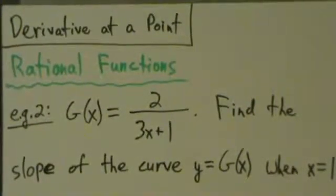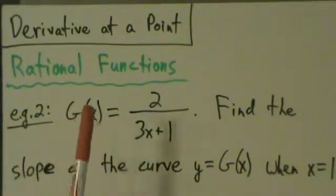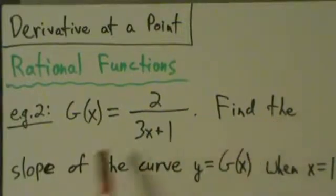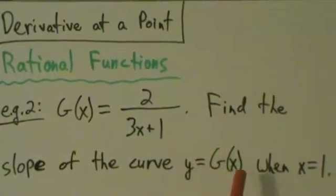Alright, so here's another example with rational functions, finding the derivative at a point. Example 2: G(x) = 2/(3x+1), and we want to find the slope of the curve y = G(x) when x = 1.